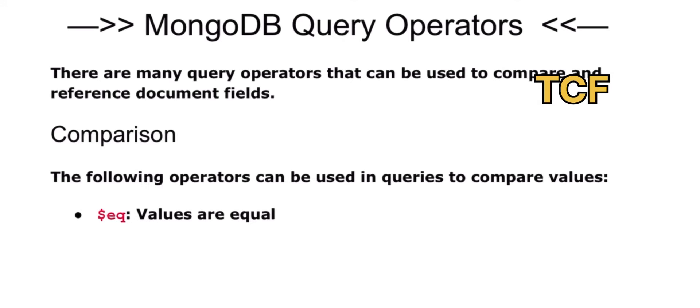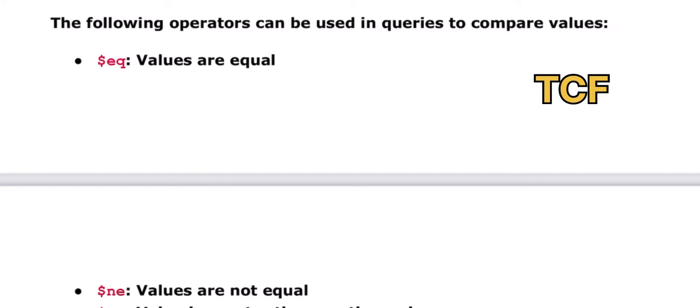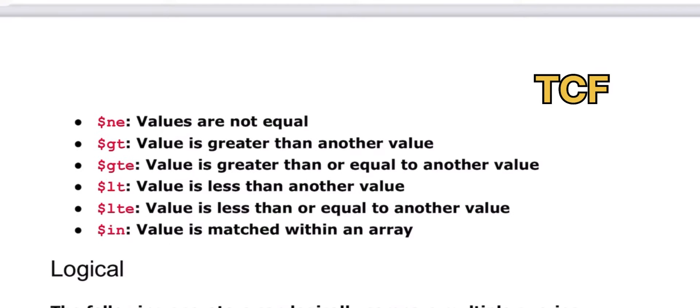These are MongoDB queries. There are many query operators that can be used to compare and reference document fields. For comparison: $eq - values are equal, $ne - values are not equal.